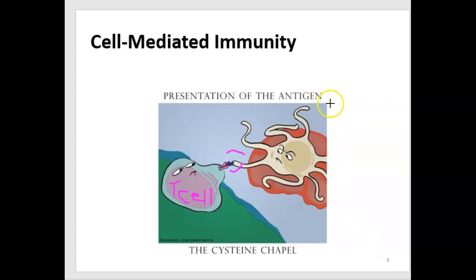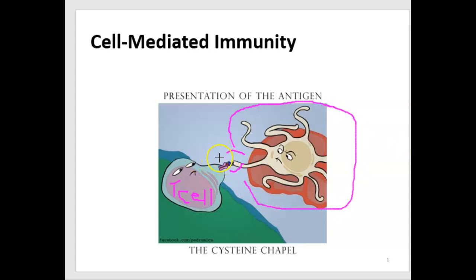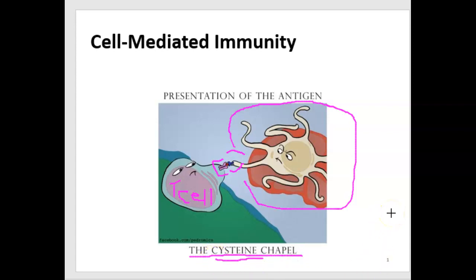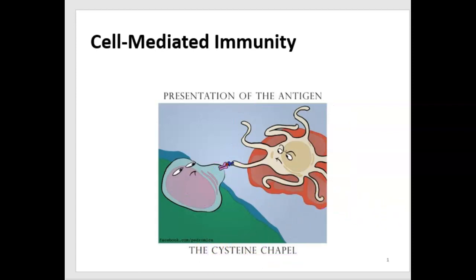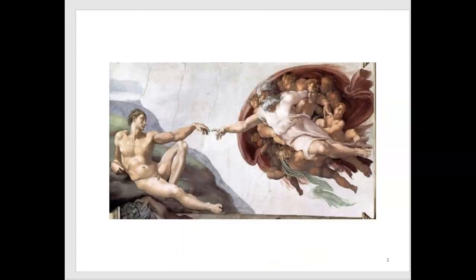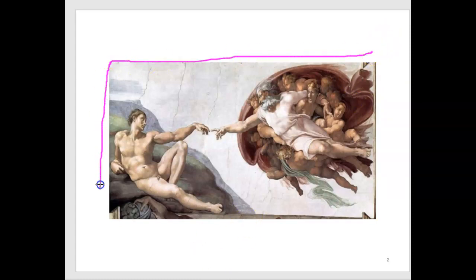The presentation is happening by probably a dendritic cell — it could be a macrophage. And the T cell recognizes it with its receptor. There's an amino acid that you might remember called cysteine, and this cartoon is kind of making fun of the fact that this amino acid cysteine reminded somebody of the Sistine Chapel.